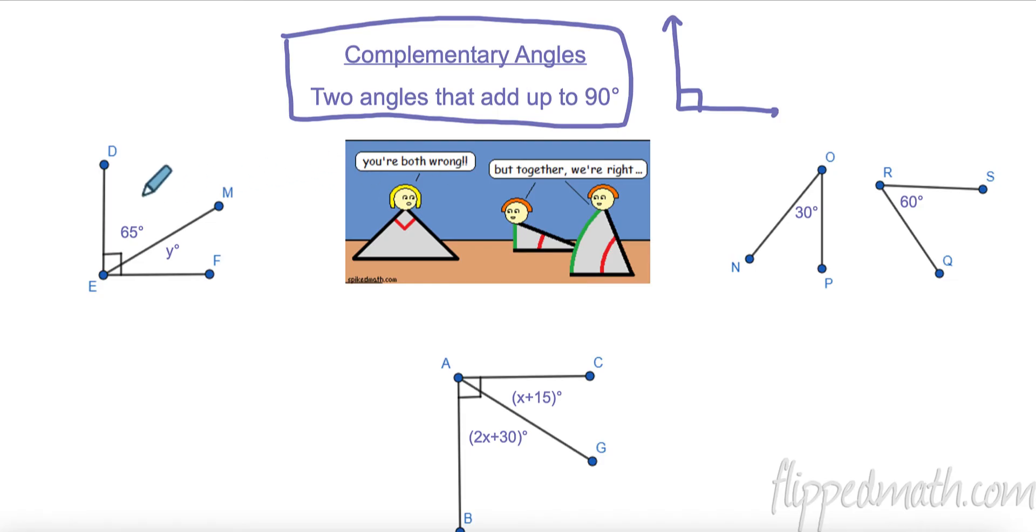So if we look over here, we have two angles. Angle D, E, M, and angle M, E, F. And they are 90 degrees. We can solve for this. Let's see. This angle plus this angle equals 90. 65 plus Y equals the whole big angle, which is 90 degrees. Then we can subtract 65 from both sides. And we can find out that Y equals 25 degrees. Easy peasy, lemon squeezy.